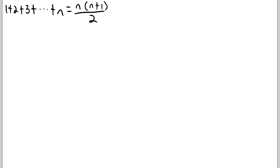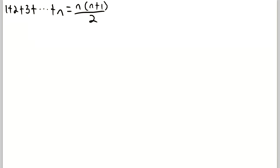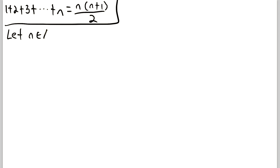If you're familiar with summation notation, we can write this sum as the sum from i equals 0 to i equals n of i. Summation notation is really cool — it turns that sum into a compact expression. Setting that aside so we have more room to write out the proof, let's define our variable: we'll let n be a natural number.